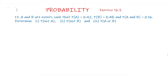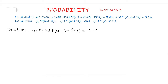We solve like this. Part 1 — probability of not A is equal to 1 minus probability of A. Probability of A is given as 0.42, so this is 1 minus 0.42 equal to 0.58. So the answer to Part 1 is 0.58.